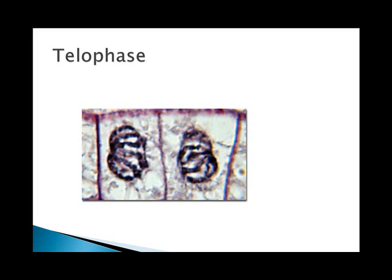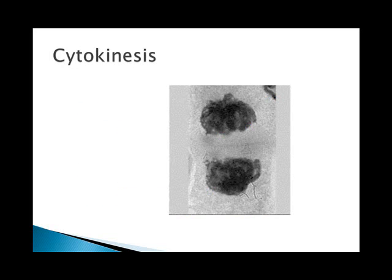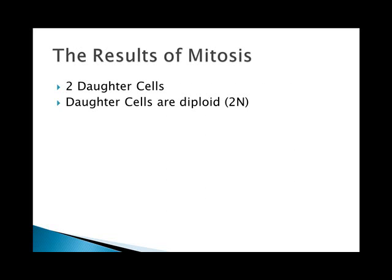Telophase begins after the chromosomes have arrived at the poles and the nuclear membranes begin to reform. The spindle fibers have also disappeared at this stage and the cell plate begins to form in plants — you can see the cell plate formation here. Cytokinesis is the point at which the parent cell splits into two actual daughter cells. In plant cells it forms from the cell plate, but in animal cells it results from a pinching in of the membrane until it pops apart. The daughter cells that come from mitosis are smaller than the parent cell and immediately go into G1 of interphase. Daughter cells are diploid 2N and are duplicate clones of the parent cell.